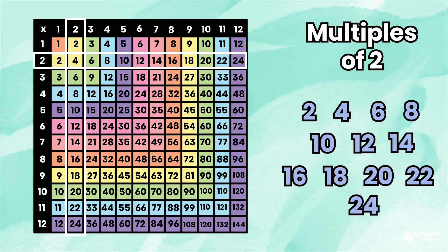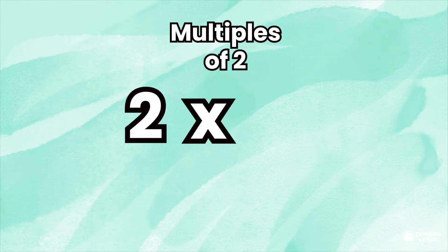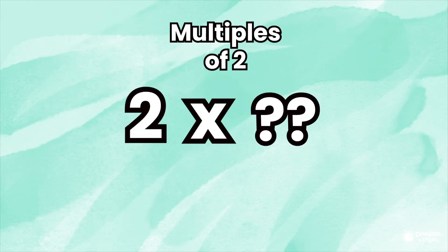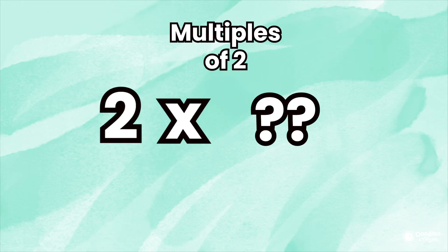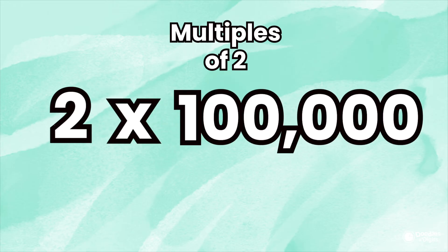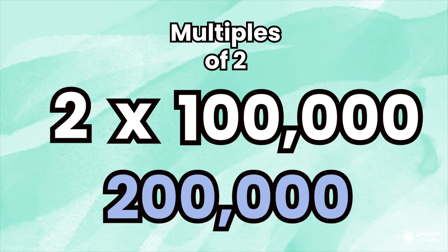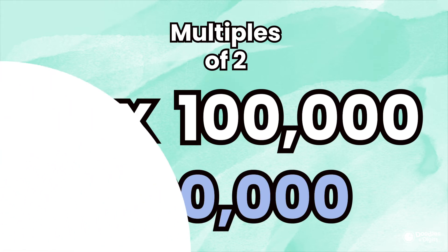Those are just some of the multiples of 2. Remember, 2 times anything will give you a multiple of 2. So if you did 2 times 100,000, which equals 200,000, then 200,000 would be a multiple of 2.